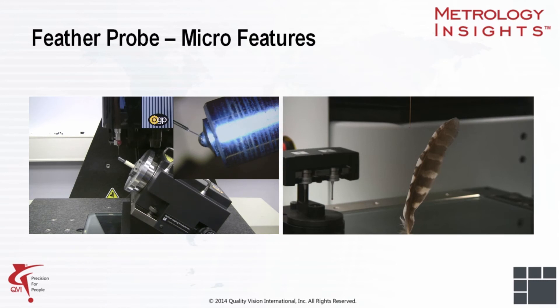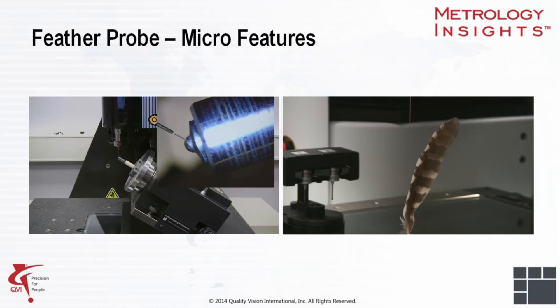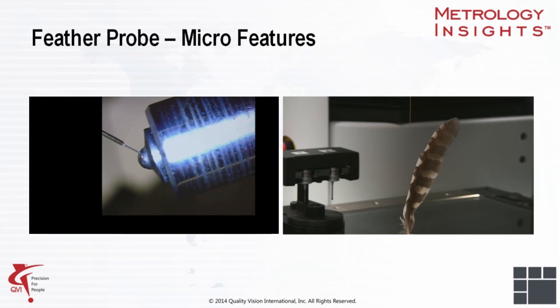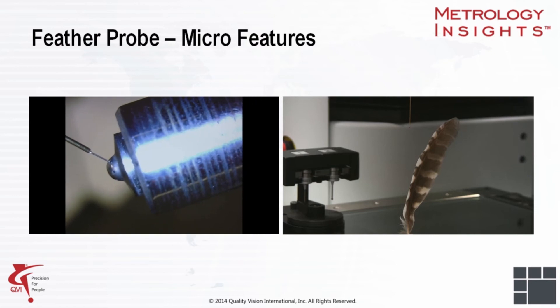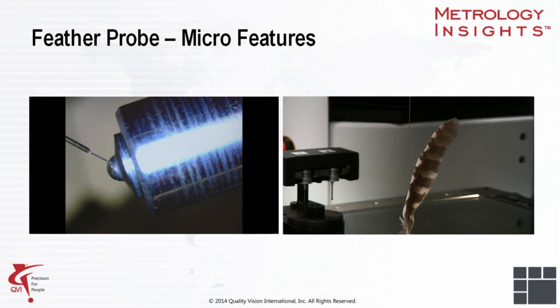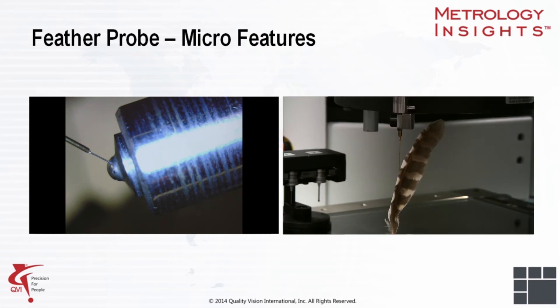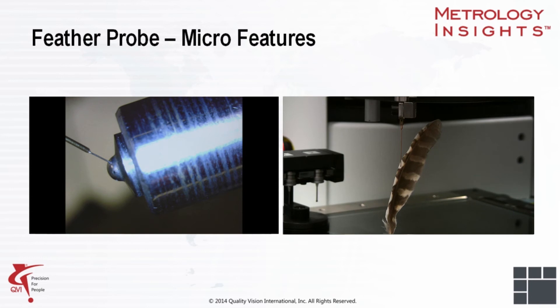To measure features which are either too small or too sensitive for conventional probing, we can use a microprobe technology known as a feather probe. The feather probe stylus ranges from one millimeter to as small as 125 microns, with a probing force as low as one milligram. That's 6,000 times less force than a normal touch probe.